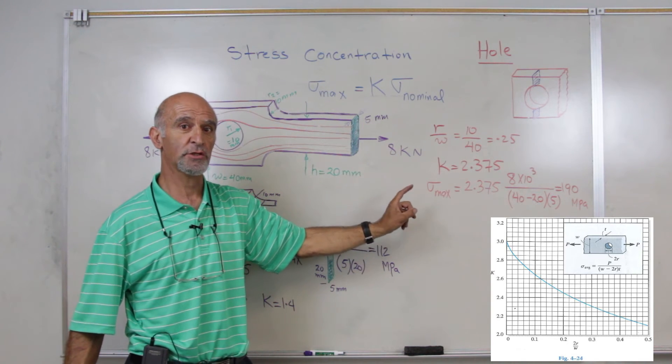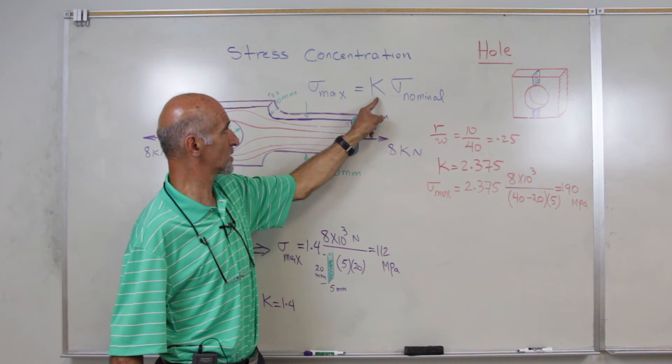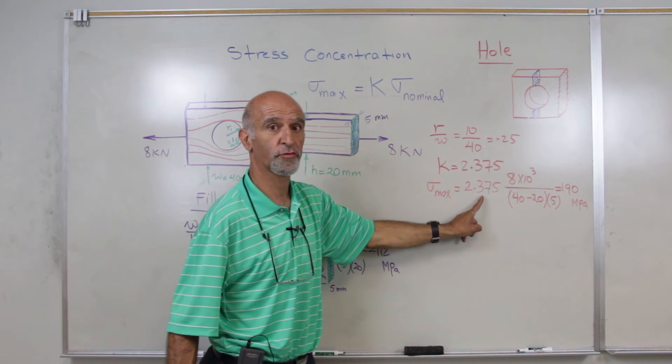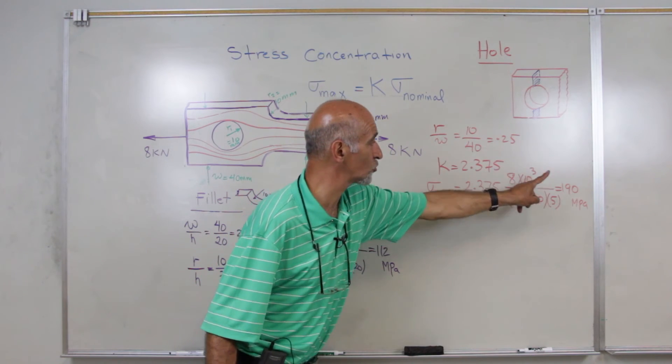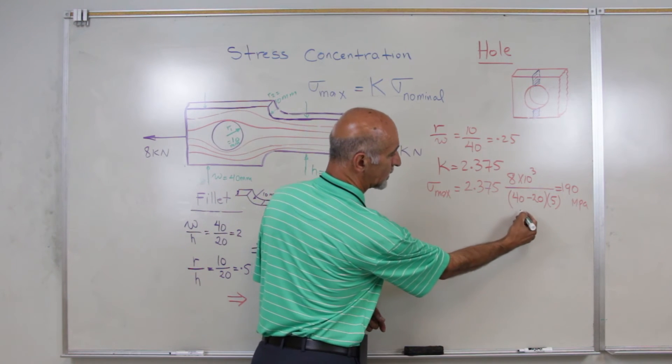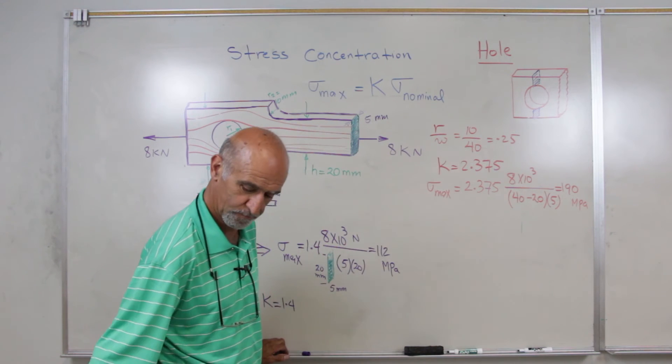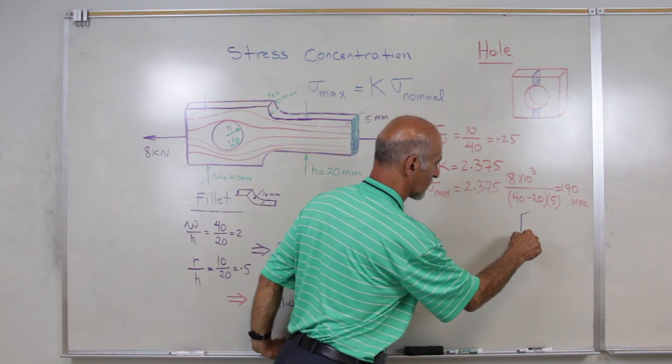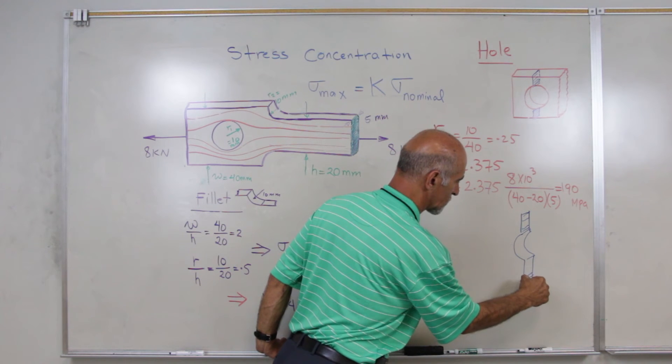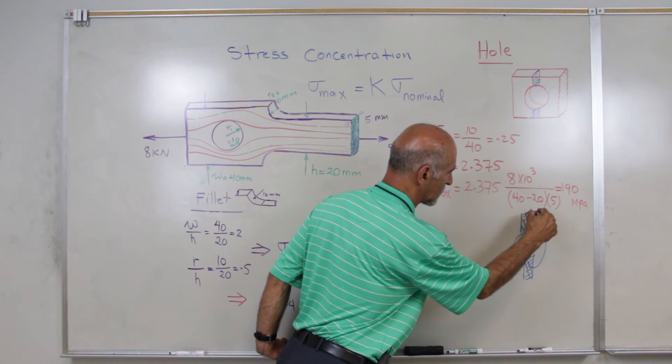Then we would proceed to calculate sigma max, where from this equation, is inputting the stress concentration factor, which has been found to be 2.375, multiplied by the nominal stress, and if you look at this nominal stress, I have calculated the nominal area in the hole to be this area where the hole is cut in the part. So this is the nominal area we would have to consider for calculating this area.